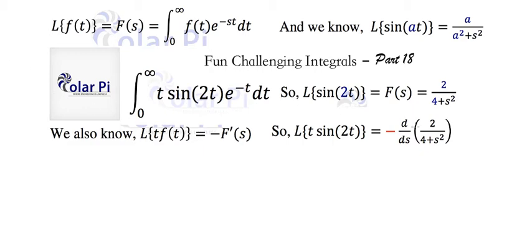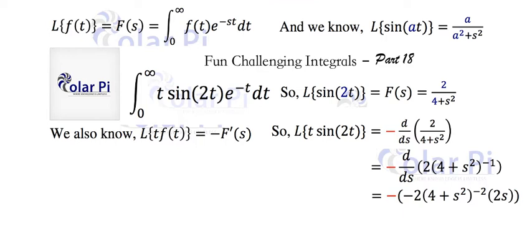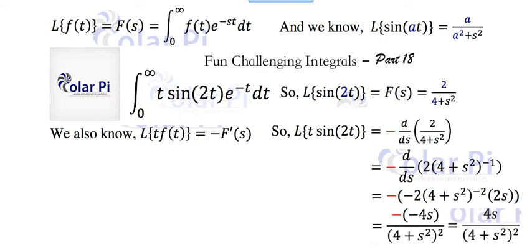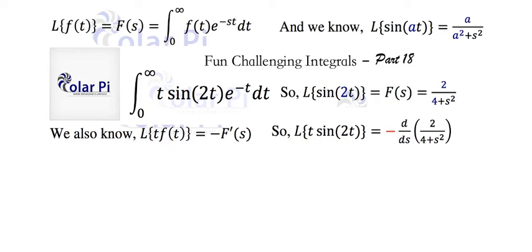Now it's derivative time — we have to take the derivative of the quotient 2 over s squared plus 4, keeping track of the negative sign. Rather than using the quotient rule, I rewrite it to use the power rule and chain rule. After applying those and simplifying, the Laplace transform of t times sine 2t simplifies all the way to 4s over s squared plus 4 squared.